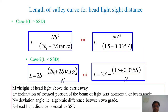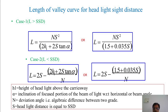For the length of the valley curve based on headlight sight distance: Case 1, L greater than SSD: L = NS² / (2H₁ + 2S·tan α), or L = NS² / (1.5 + 0.035S). Case 2, L less than SSD: L = 2S − (2H₁ + 2S·tan α)/N, or L = 2S − (1.5 + 0.035S)/N. Here H₁ is the height of the headlight above the carriageway, α is the inclination of the headlight beam, and N is the deviation angle. Headlight sight distance equals stopping sight distance.